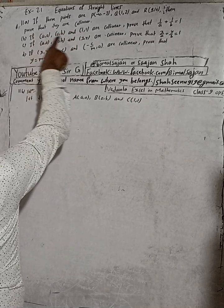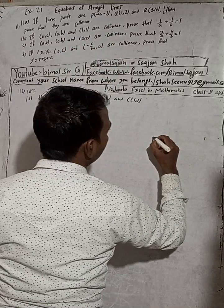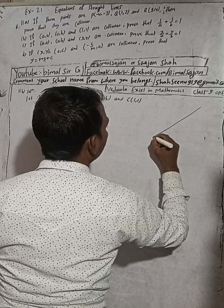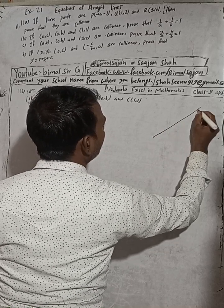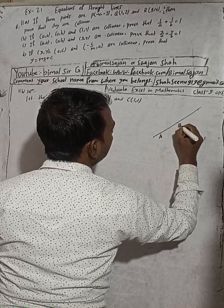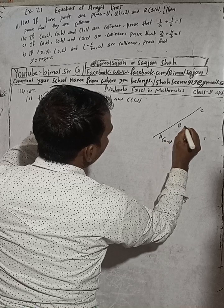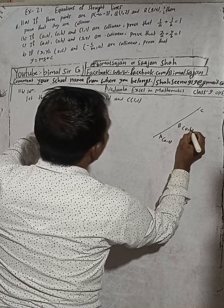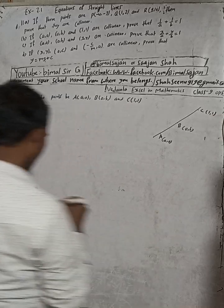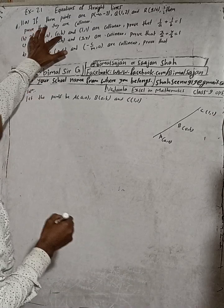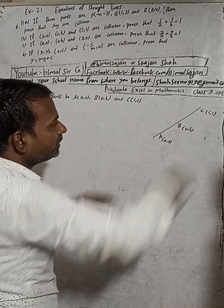Now if these three points are collinear, it means they are in the same line. Suppose this is in the same line - here is one point, another point, another point. I will name this as A, this as B, and this as C. So point A is (a,0), point B is (0,b), and this is (1,1). The question tells us if these three points are collinear, meaning in the same line.